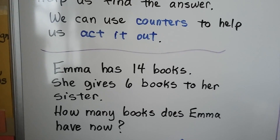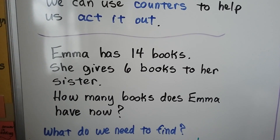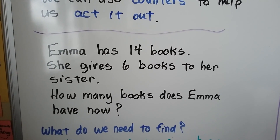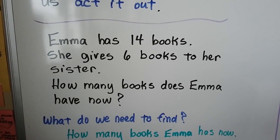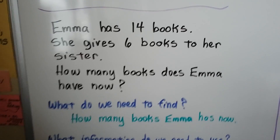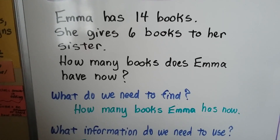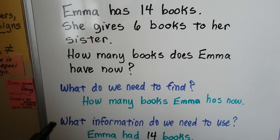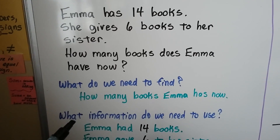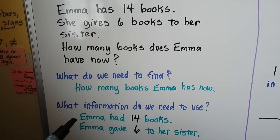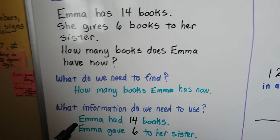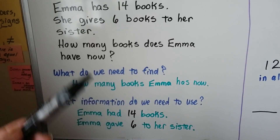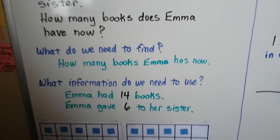Emma has 14 books. She gives 6 books to her sister. How many books does Emma have now? So what do we need to find? We need to find how many books Emma has now. And what information do we need to use? We can use that Emma had 14 books and she gave 6 to her sister. We'll use that information.